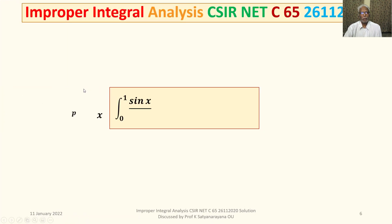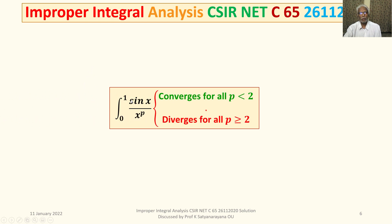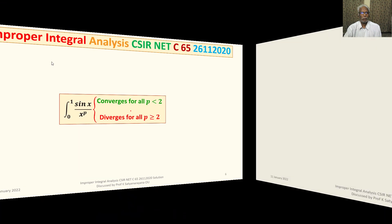Before discussing the other options, let us establish a result that will be used in the discussion of the remaining three options: ∫₀¹ sin(x) / xᵖ dx converges for all p < 2, and diverges for all p ≥ 2. We will prove these results now.